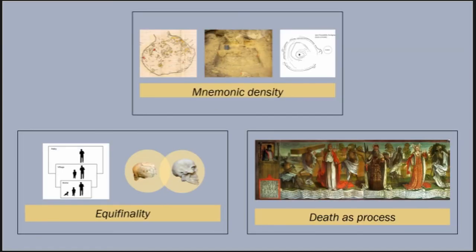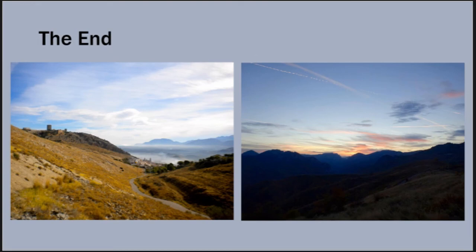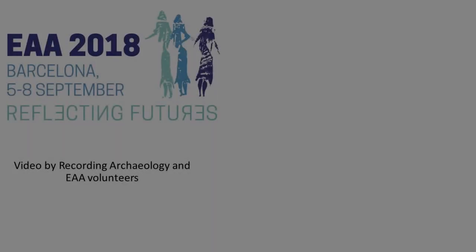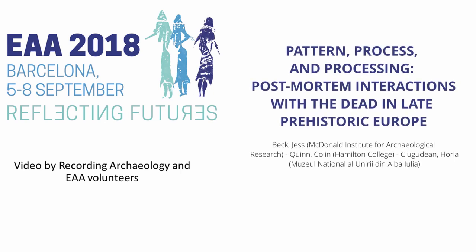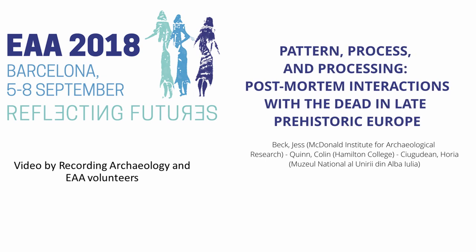By incorporating these three interpretive tools—appreciating the mnemonic density of place and practice, untangling the sometimes specious equifinality of commingled assemblages, and appreciating death as a process rather than an event—we can better understand the social and symbolic importance of post-mortem interactions with human remains and variability in prehistoric mortuary practice. That concludes my talk, and I'm happy to take questions if there's time.